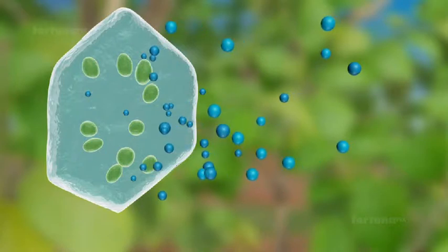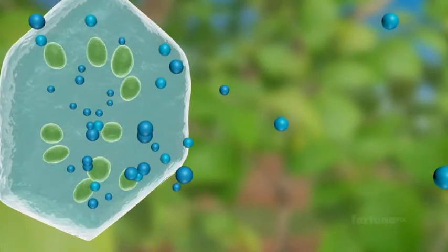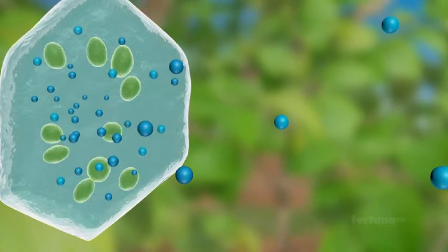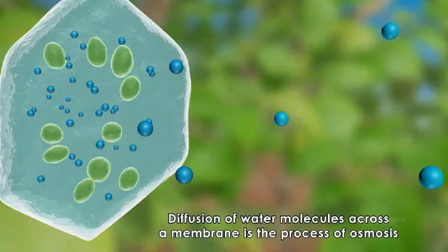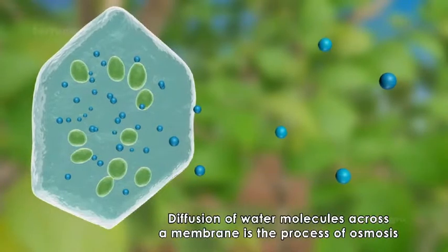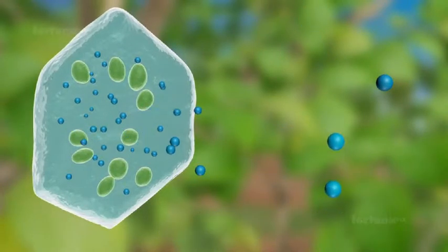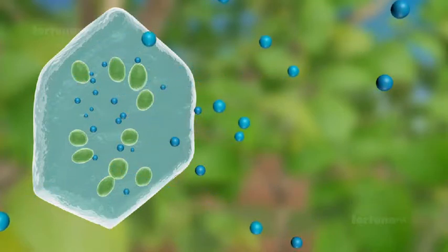Because they are very small, water molecules, which are polar, can move freely across the cell membrane. This diffusion of water molecules across a membrane is the process of osmosis. During osmosis, the movement of water will continue until equilibrium of the concentrations is achieved.